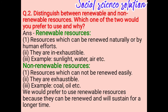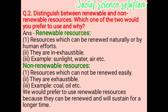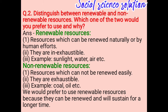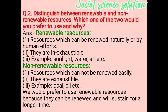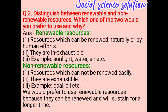Distinguish between renewable and non-renewable resources. Which one would you prefer to use and why? Renewable resources are resources which can be renewed naturally or by human effort; they are inexhaustible. Examples: sunlight, water, air. Non-renewable resources are resources which cannot be renewed easily; they are exhaustible. Examples: coal, oil, etc. We would prefer to use renewable resources because they can be renewed and will sustain for a long time.